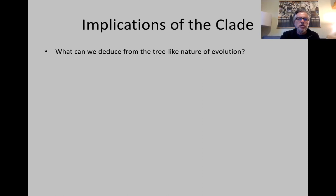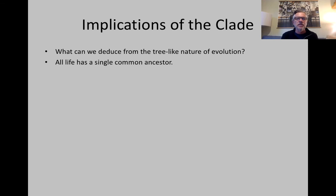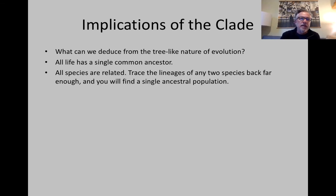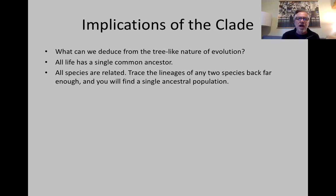So what can we deduce from the tree-like nature of evolution? The first thing is that all life has a single common ancestor. That's pretty impressive, and we're going to talk about that more later in the unit. Secondly, this means that all species are related. Take any two species and trace their lineage back far enough, and you will find a single ancestral population that they are derived from.